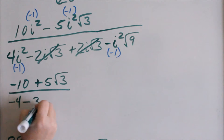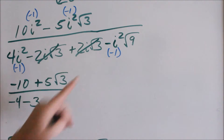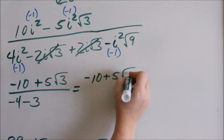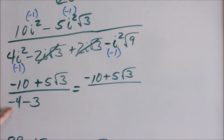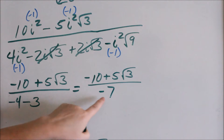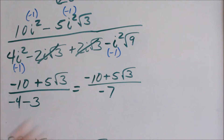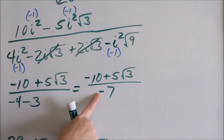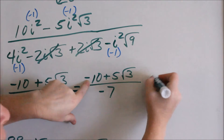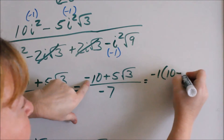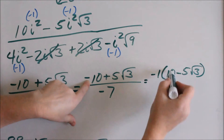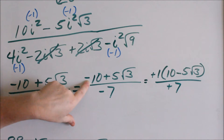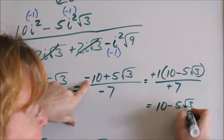Remember, the i's should go away in the denominator — we should not have any i's. In the numerator, I cannot combine these two terms; I can't combine numbers to radicals. Negative 4 minus 3 — I'm in debt 4 and in debt 3 more — negative 7. I cannot reduce any of my numbers by anything, and I cannot simplify this radical. So I'm going to factor a negative 1 out of the top, which cancels with the negative in the denominator. Basically, factoring a negative 1 out of the top gives 10 minus 5 square root of 3, all over 7.